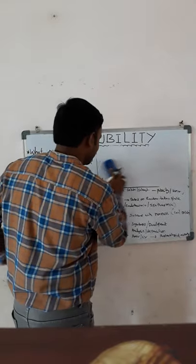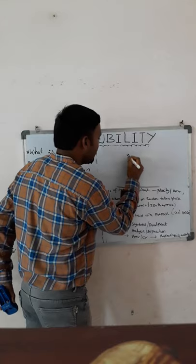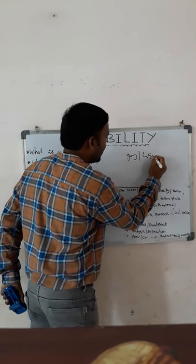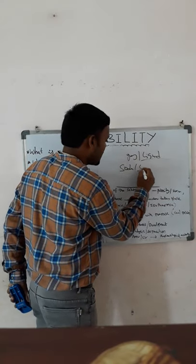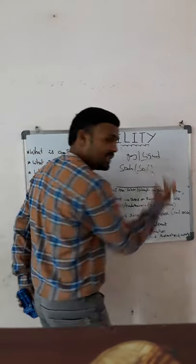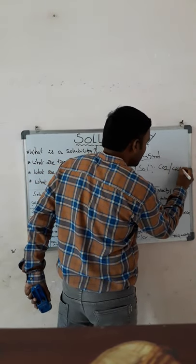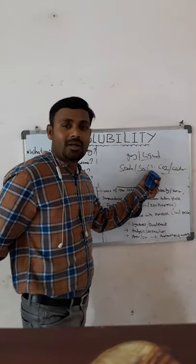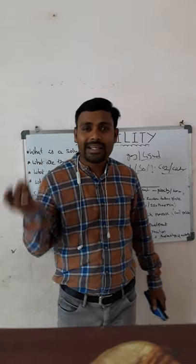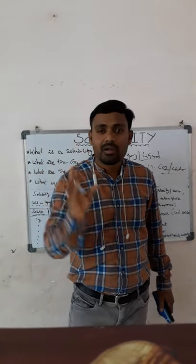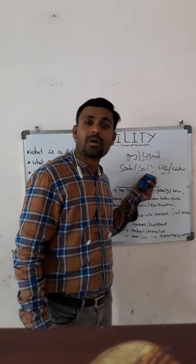Now, the effect of pressure on solubility, using a gas-in-liquid example: take soda water or soft drinks. Carbon dioxide is dissolved in water at high pressure. When you open a cold drink bottle cap, the pressure decreases and carbon dioxide gas evolves and escapes. This means when pressure decreases, solubility decreases, and when pressure increases, solubility increases.